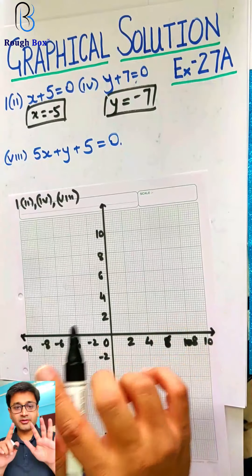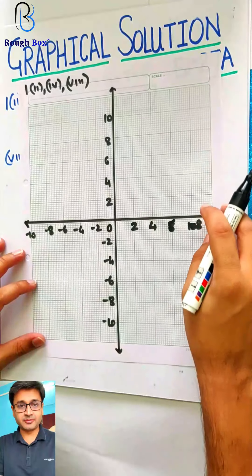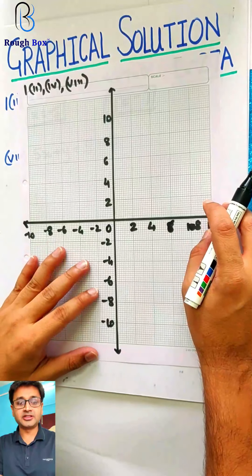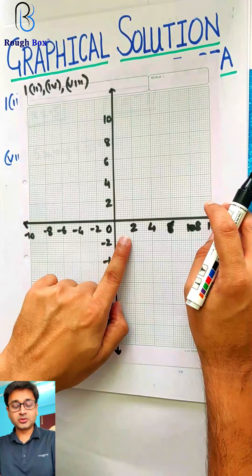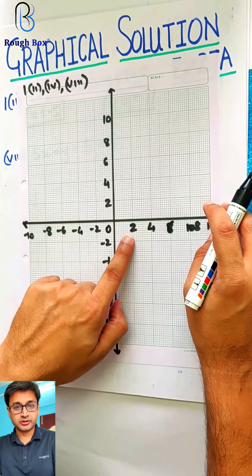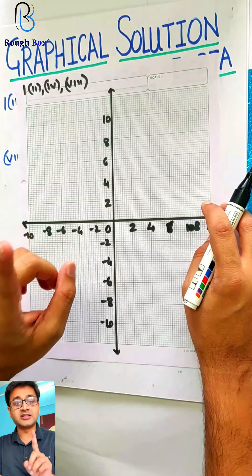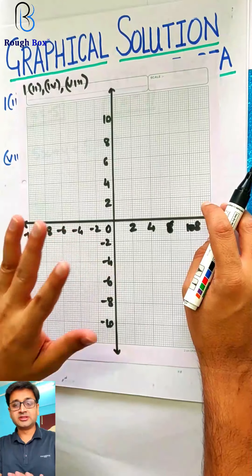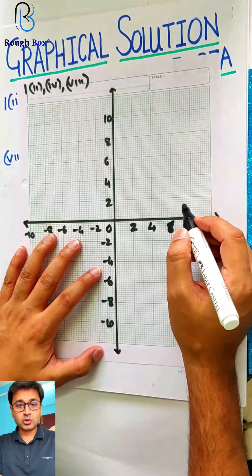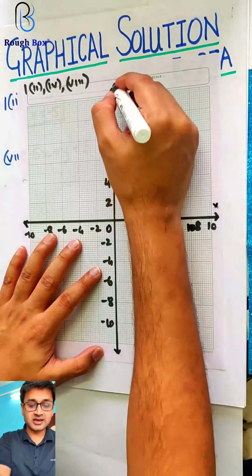I want you to have six graph papers ready. If you've got six graph papers ready, you can go at a very good and smooth pace. Take all as 1 centimeter = 1 unit, or 2 centimeters = 2 units. Don't take 2 centimeters as 1 unit unless mentioned in the question. Take everything as 2 centimeters = 2 units.